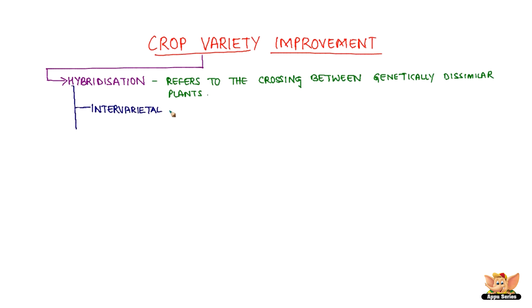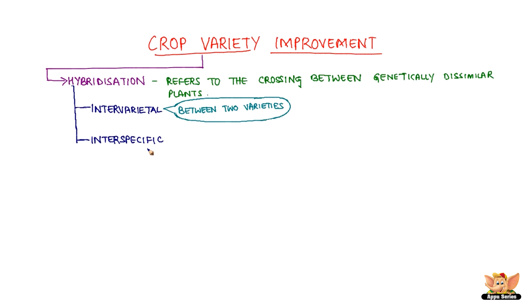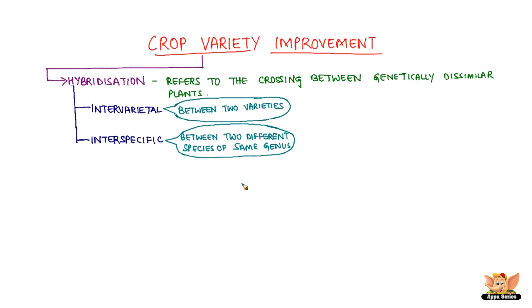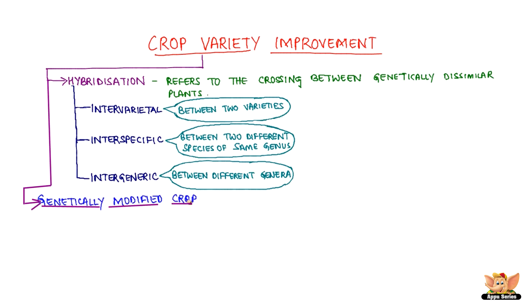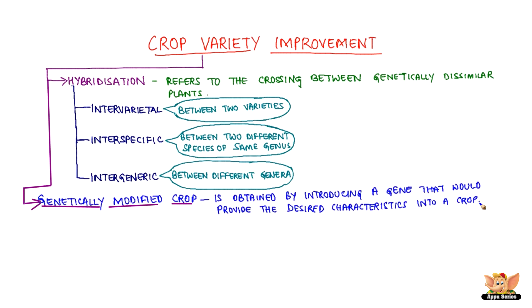The crossing may be intervarietal, that is, between two varieties of plants. Or interspecific, that is, between two different species of the same genus. Or intergeneric, between different genera. Genetically modified crops can also be grown by introducing a gene that would provide the desired characteristics into a crop.